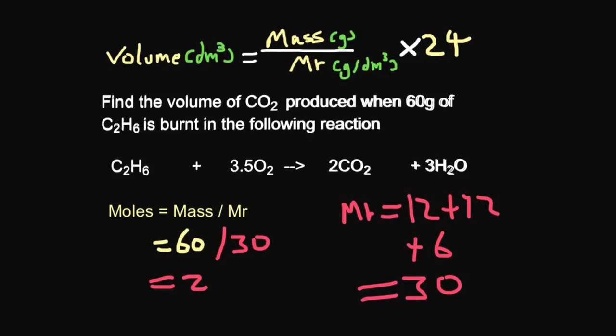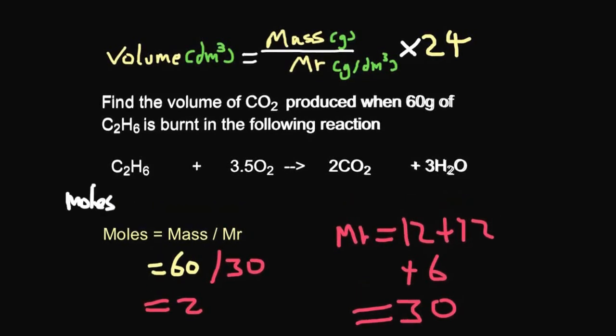So we've got an Mr of 30. So that's 60 divided by 30. So that's going to equal two. So we've got two moles. Let's write that in. So I'll write it in here underneath the C2H6. We've got two moles of that. It's a really good idea to write it underneath the full balanced equation. Make sure your equation is balanced, by the way, or this technique won't work. So I've got two moles of C2H6. So what's the ratio between the C2H6 and the CO2? Well, you can see there's one of those makes two of these.